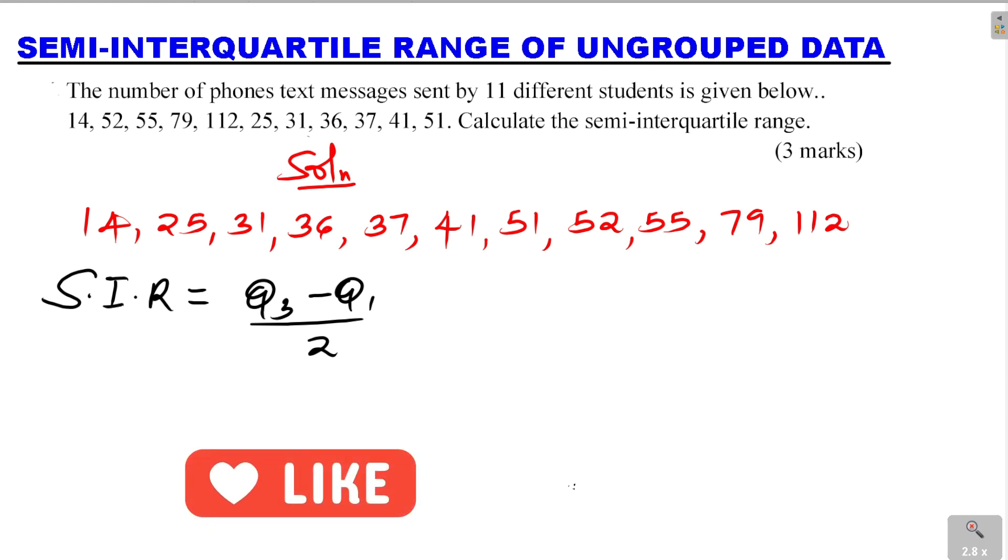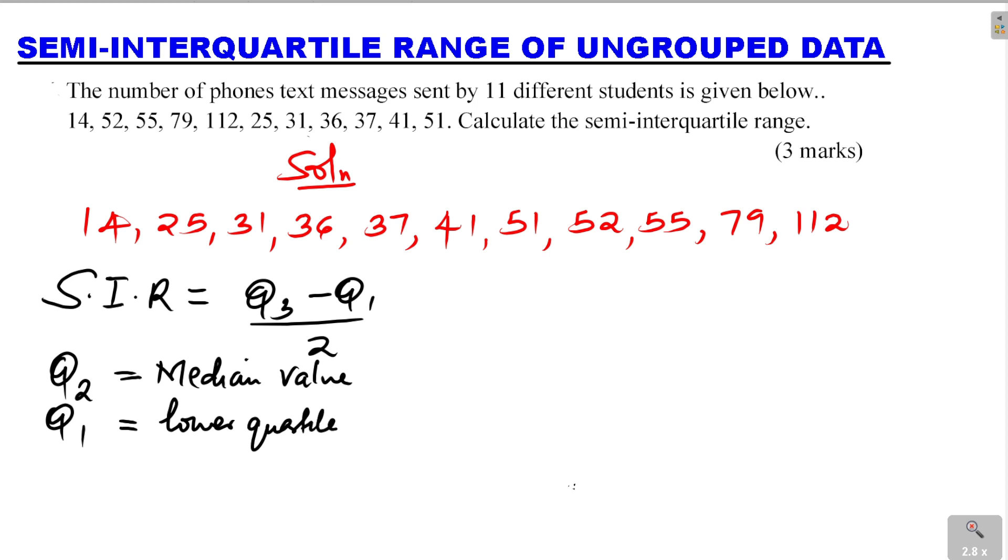Q2 is the median, the median value. Q1 is the lower quartile, and Q3 is the upper quartile.